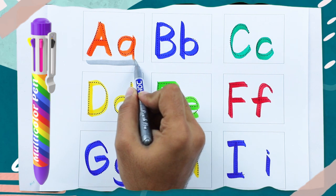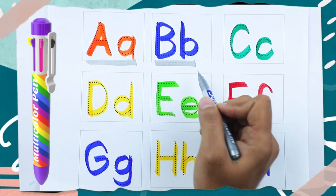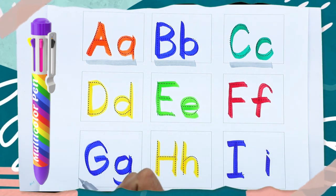It's Orange color A, A for Apple, Blue color B, B for Ball, Green color C, C for Cat.